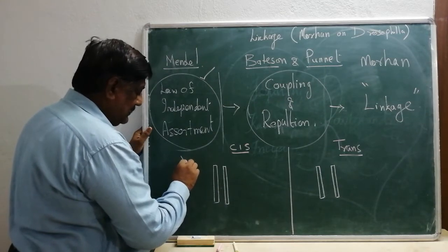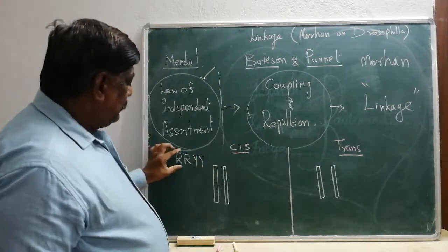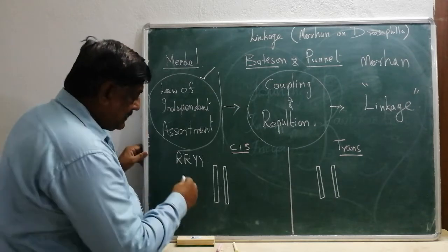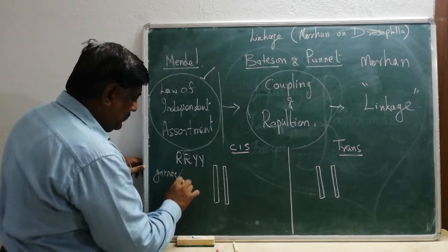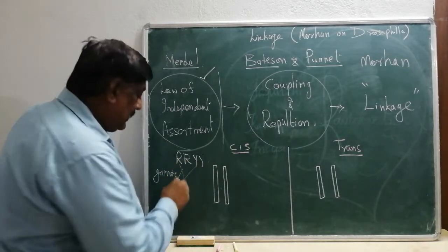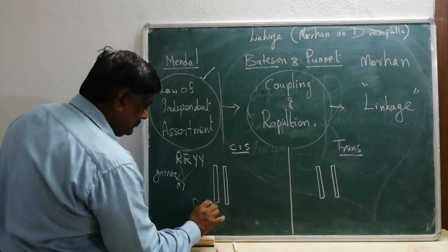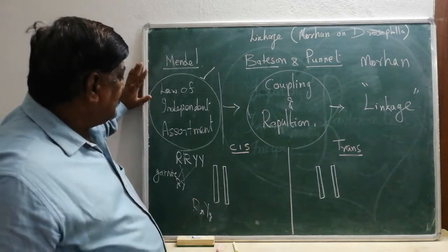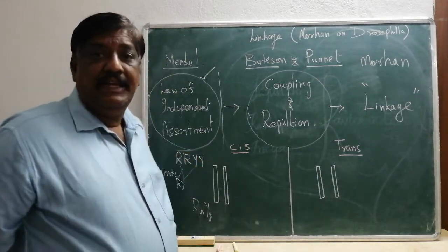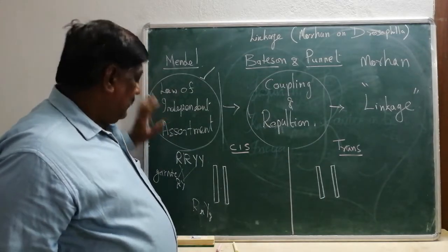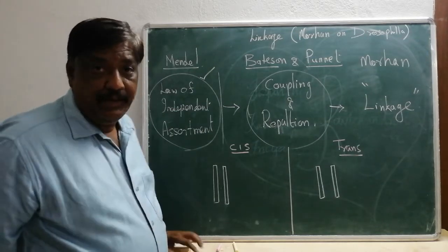The Law of Independent Assortment says that though two genes — for example, round and yellow — are present in the same chromosome, during gamete formation they tend to separate individually. That is why we get recombination. So this law says that during gamete formation, though they are present in the same chromosome, they tend to get separate. That is why it is called the Law of Independent Assortment.